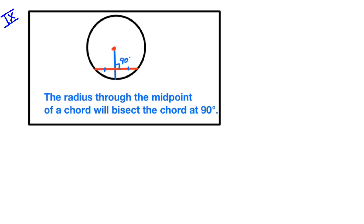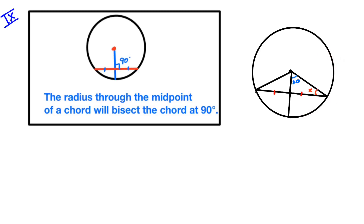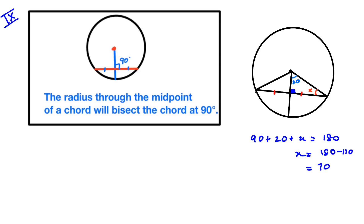The next and last theorem: the radius through the midpoint of a chord bisects the chord at 90 degrees. In this diagram, we know this is a radius, this is a radius, and this is a radius, and these two sides are equal. We need to find x. Using this theorem, this angle is going to be 90 degrees. Using the angle sum of a triangle: 90 plus 20 plus x equals 180, therefore x is equal to 180 minus 110, so x is equal to 70 degrees.